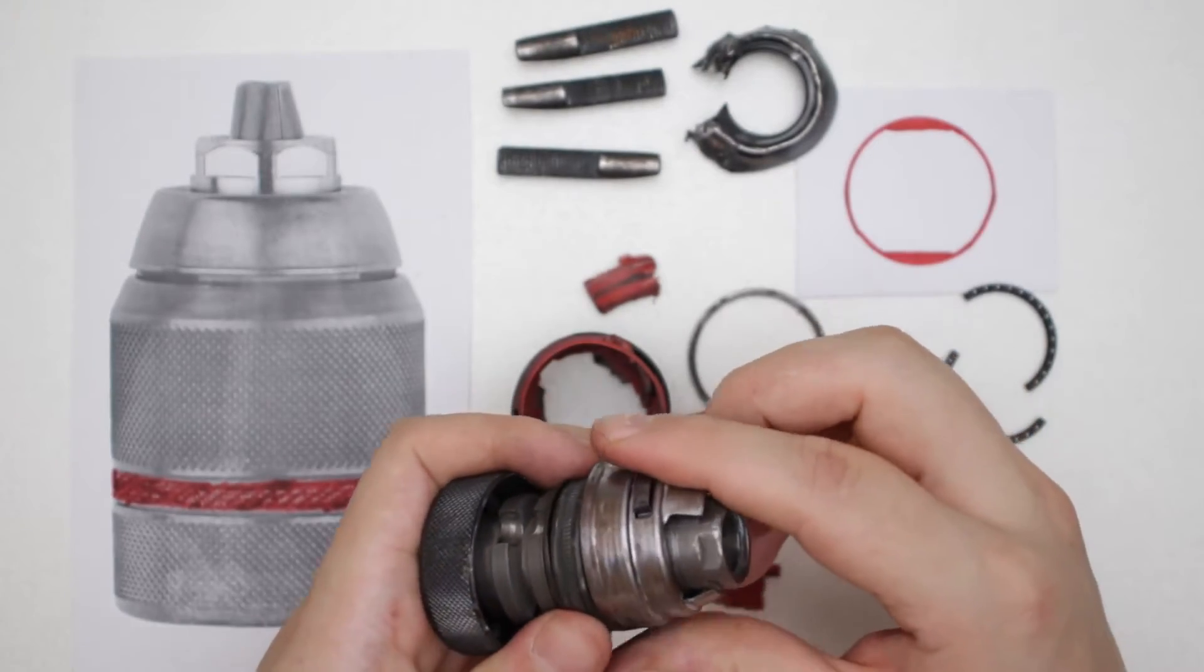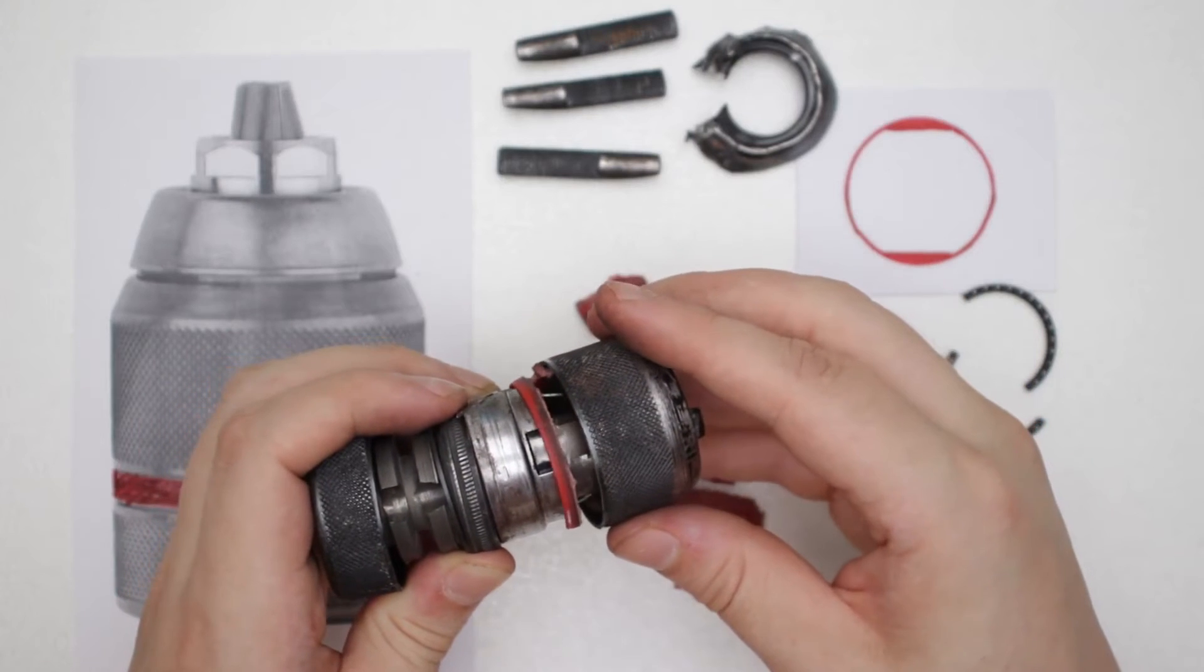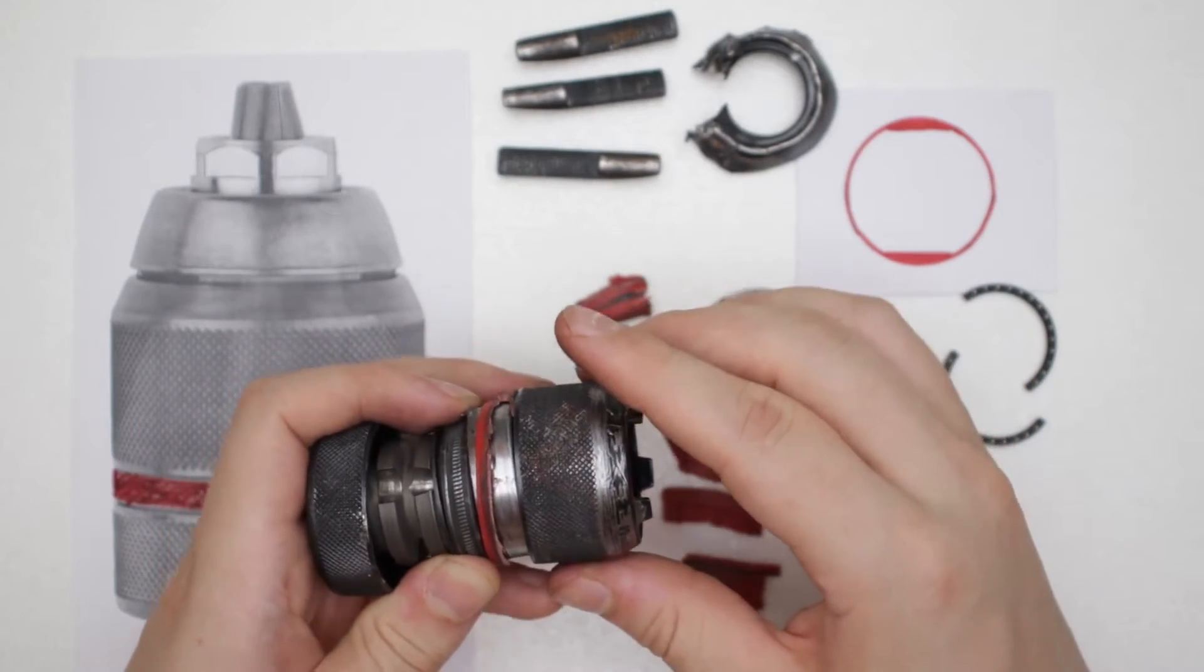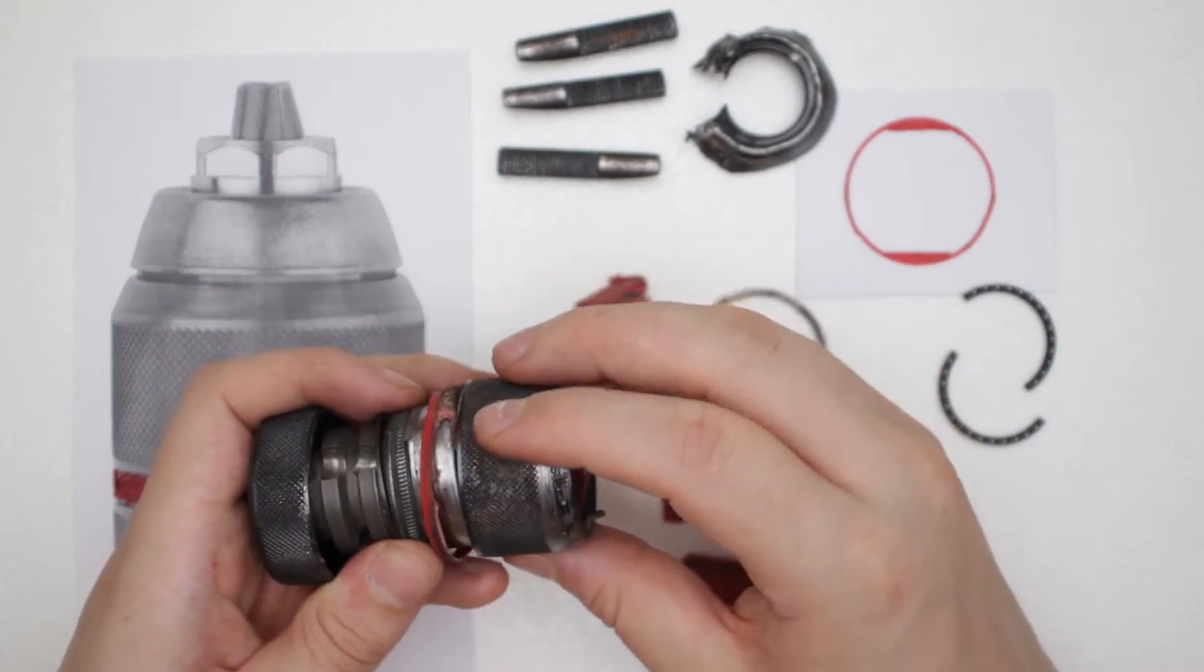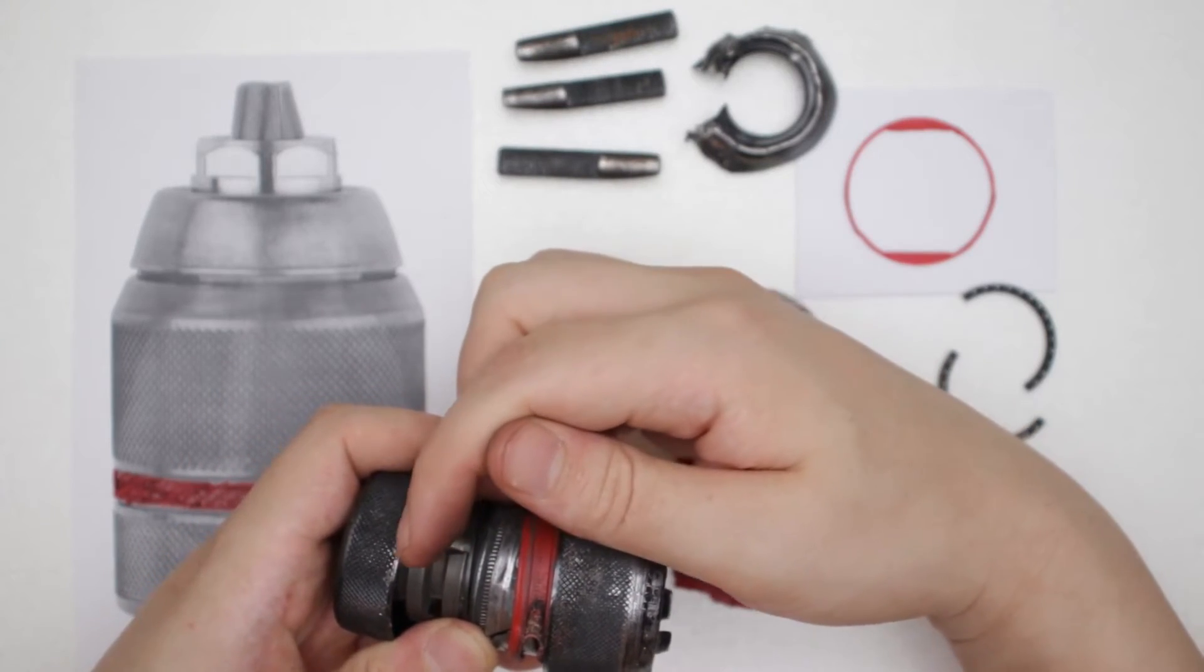So after this thing is on, this part goes over the top. It would go all the way down to about here so that there's only the gap for the plastic part. So this and this would be together.